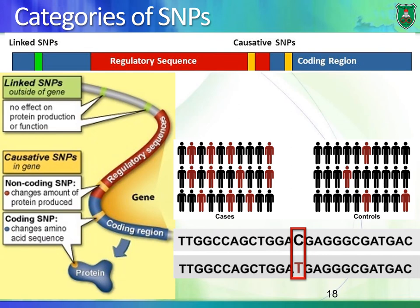How are SNPs important? I said that half a million SNPs are relevant. These SNPs can be divided into two types: they can either be linked or they can be causative.